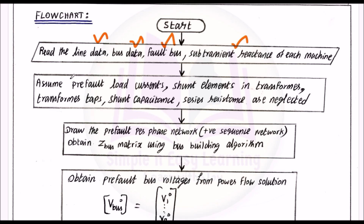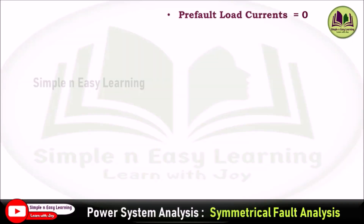Step 2: Assume pre-fault load currents, the shunt elements in transformers, transformer taps, shunt capacitance, and series resistance are neglected. The pre-fault load currents are also neglected, so they are set equal to zero.